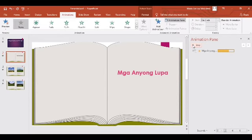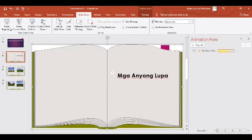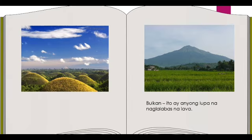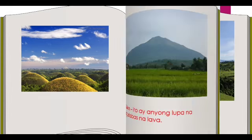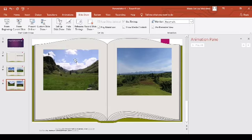Mga anyong lupa — diba? Yan ang gamit ng Page Curl at Fill Text. Meron na tayo ng book — 'Mga Anyong Lupa.' Ang iba't ibang uri ng anyong lupa ay ang mga nasa larawan — ang burol, ang vulkan. 'Ito ay anyong lupa na naglalabas ng lava.' Ayan po ang Page Curl at ang Fill Text.